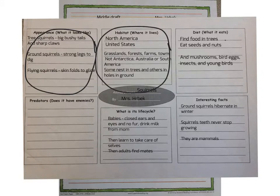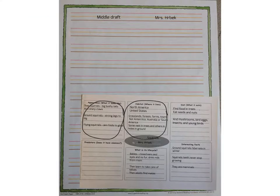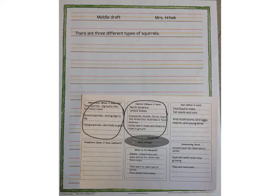Now that I've re-read my facts, I'm going to make the first sentence of my middle paragraph. The first sentence tells the reader what the paragraph is going to be about. My paragraph is going to be all about how there are three different types of squirrels, so I'm going to write right here on my draft paper: 'There are three different types of squirrels.' Now take a look at your first choice, read your facts, and decide what your first sentence should say. Pause the video and write your first sentence on your paper.